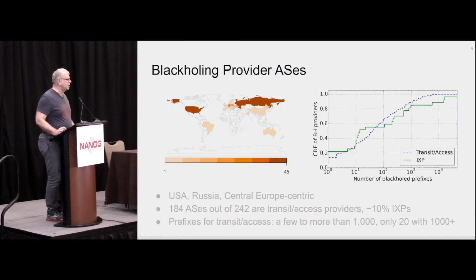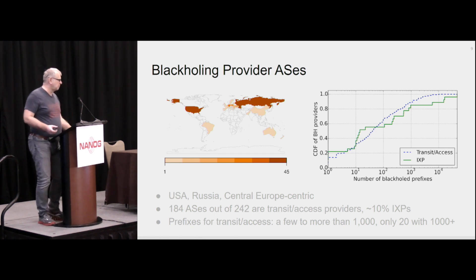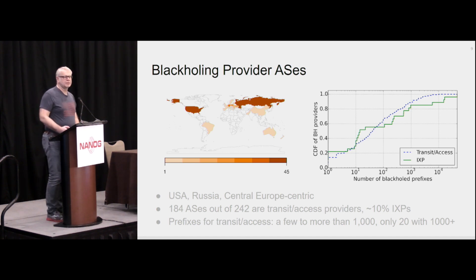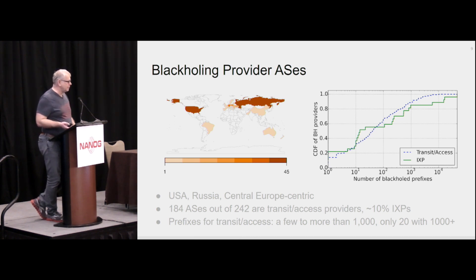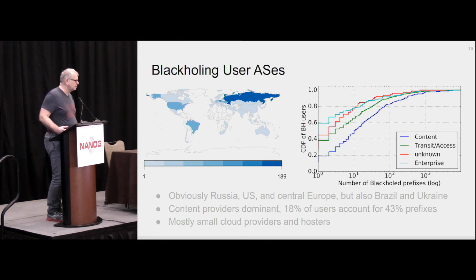Looking at where providers offering blackholing services are located, they are mostly in the U.S., Russia, and Central Europe. Out of 180 ASes, a lot of the 242 transit access providers are represented, and roughly 10% of IXPs also offer this feature. The same geographic pattern holds for blackholing users.